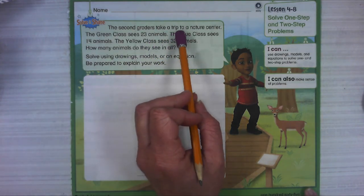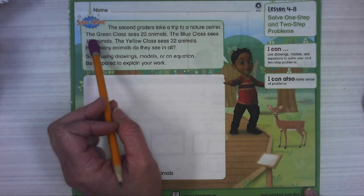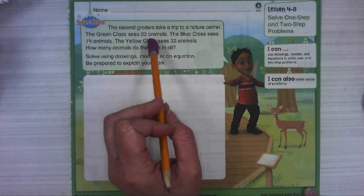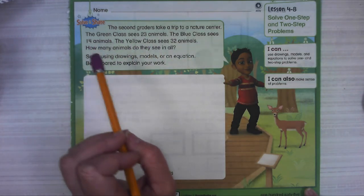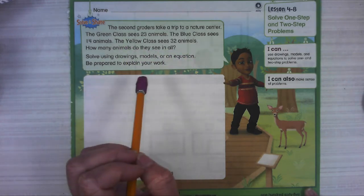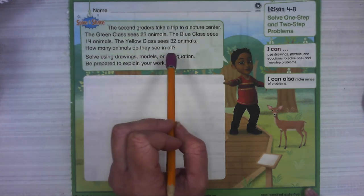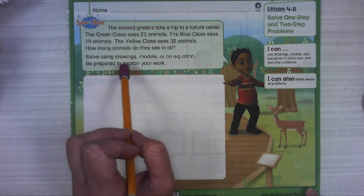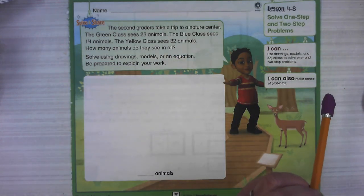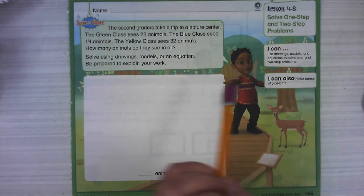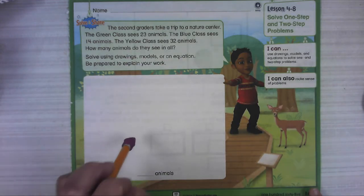The second graders take a trip to the nature center. The green class sees 23 animals. The blue class sees 14 animals. The yellow class sees 32 animals. How many animals do they see in all? We're going to solve using drawings, models, or an equation, and be prepared to explain our work.